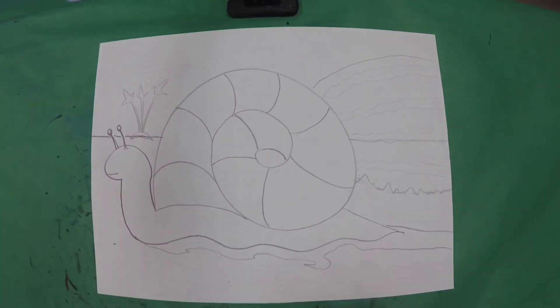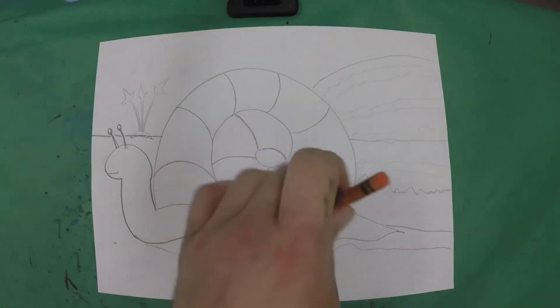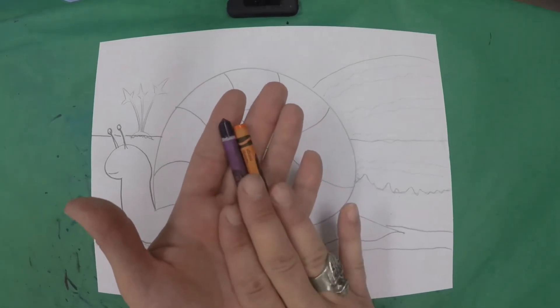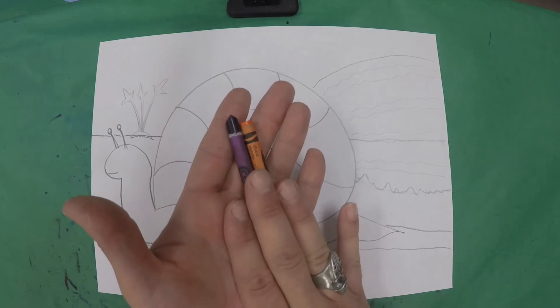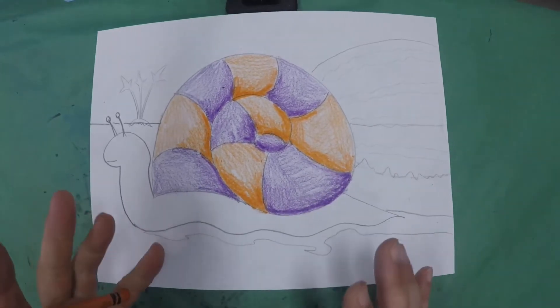So from there we're going to choose two colors. It can be any two colors you want. I think I'm going to pick purple and orange. And we're going to repeat the order of these colors to create our pattern. Now remember, your pattern does not have to be the same as my pattern. So here we have our shell with this wonderful pattern.